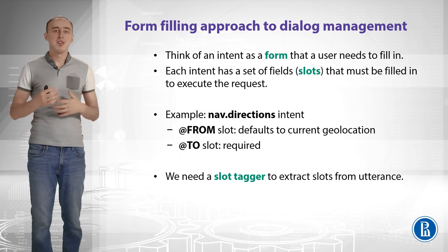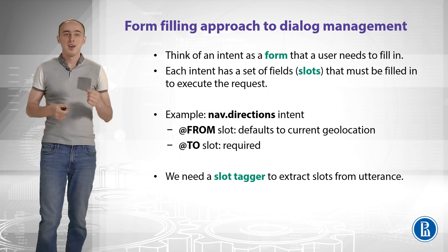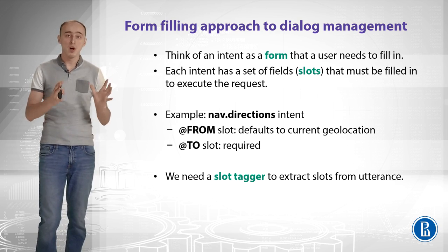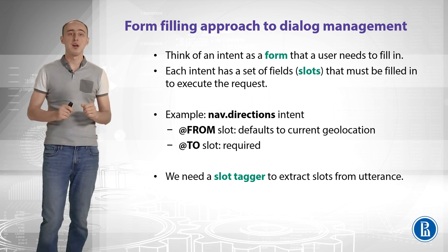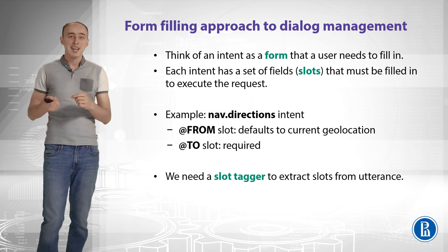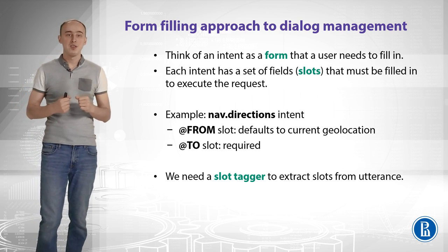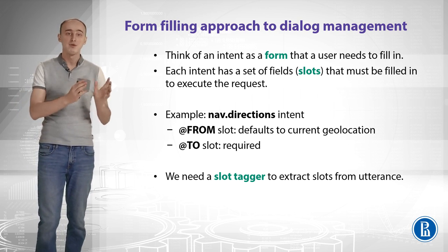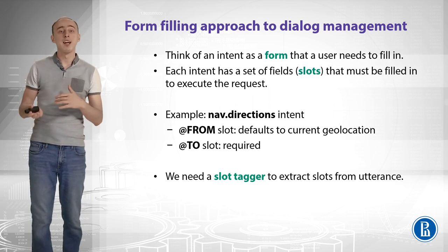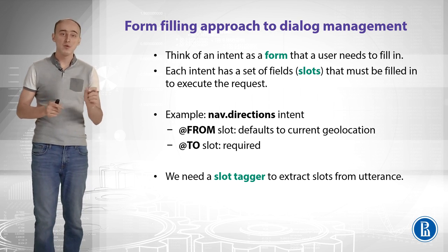How does our chatbot or personal assistant track what we are saying? You should think of an intent as a form that a user needs to fill in. Each intent has a set of fields — so-called slots — that must be filled in to execute the user request. For example, the 'navigation_directions' intent needs to know where we want to go and from where. So we have two slots: 'from' and 'to.' The 'from' slot is optional because it can default to the user's current geolocation, but the 'to' slot is required — we cannot build directions if you don't say where you want to go. We need a slot tagger to extract slots from the user utterance.